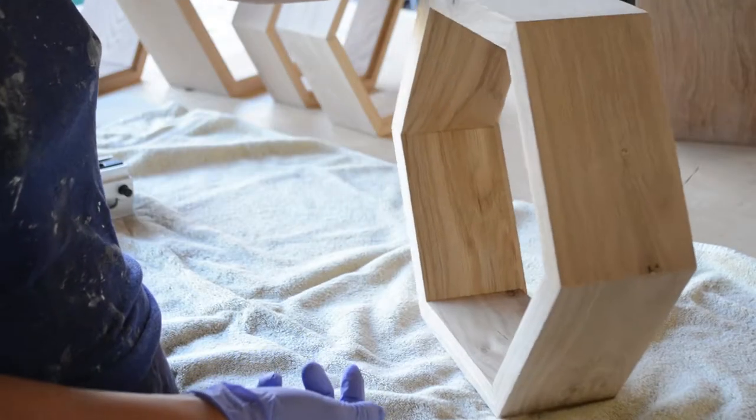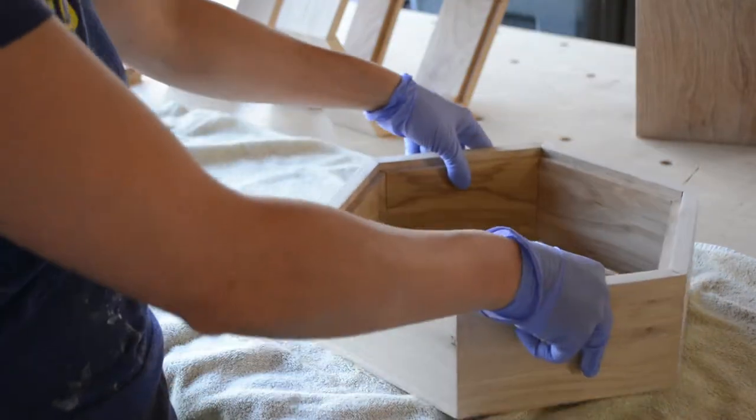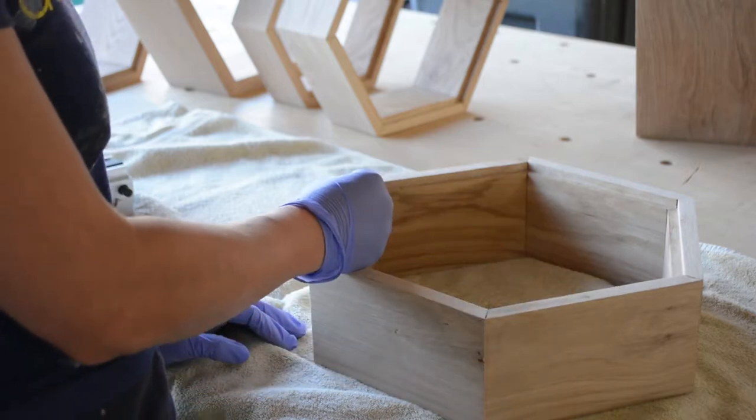Once I determine the orientation of the hexagons, I mark the spot where I'm going to drill the holes for the hanger bolts. If the back of the shelf were a clock face, I want the holes at approximately 10 o'clock and 2 o'clock.